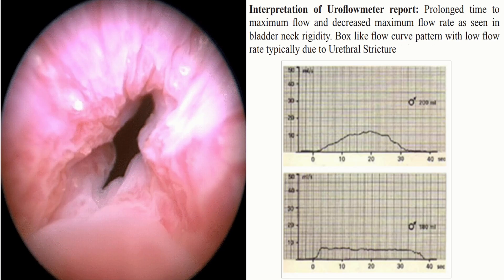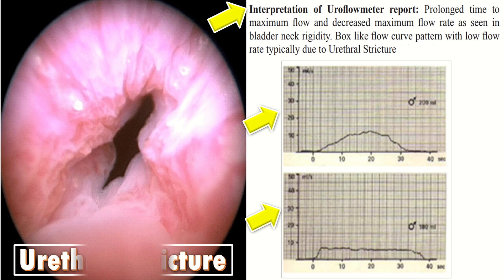When we study the interpretation of the uroflowmetry report, we find that there is prolonged time to maximum flow and decreased maximum flow rate, as seen in bladder neck rigidity. A box-like flow curve pattern with a low flow rate is typically due to urethral stricture.